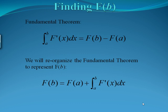Remember, the fundamental theorem of calculus says the integral from a to b of f prime of x dx equals the antiderivative at b minus the antiderivative at a. Our goal here is to find f of b. So we can rearrange the fundamental theorem a little bit by adding the f of a term over to the other side. It tells us that f of b will be equal to f of a — the antiderivative at our starting point — plus the area under the curve from a to b of the derivative function.